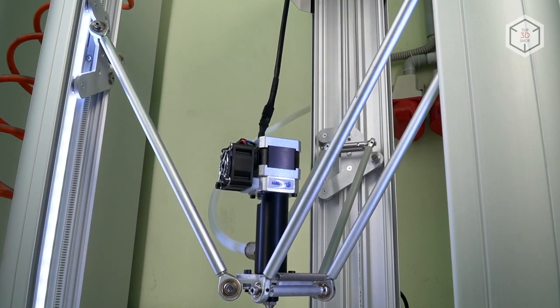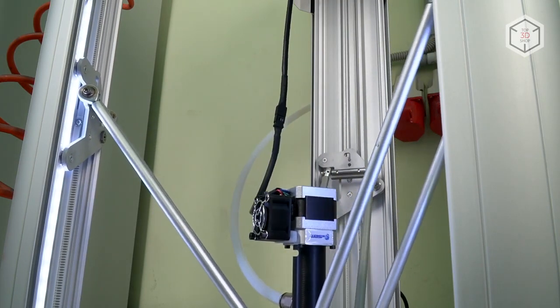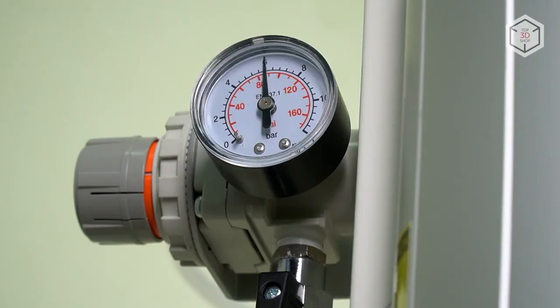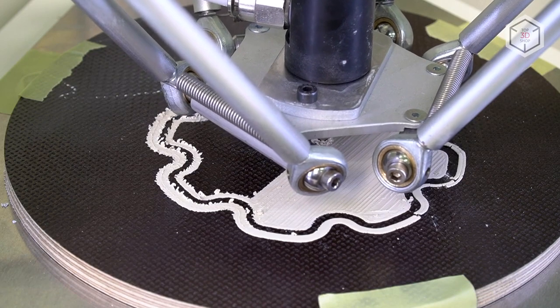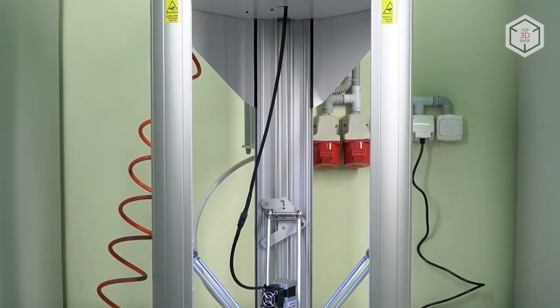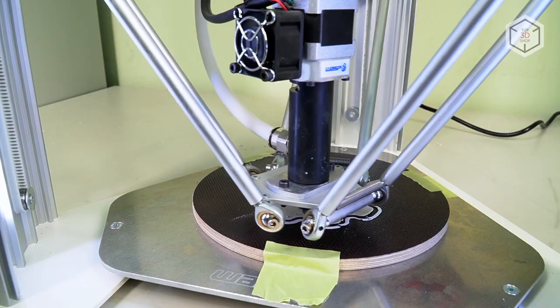Such a traditional solution reduces vibration during printing and thereby guarantees stable high print quality. The prepared mixture is pushed from the pressurized container through the tube and into the extruder mechanism, where a screw then drives it into the nozzle.